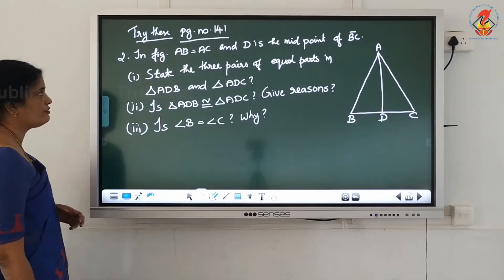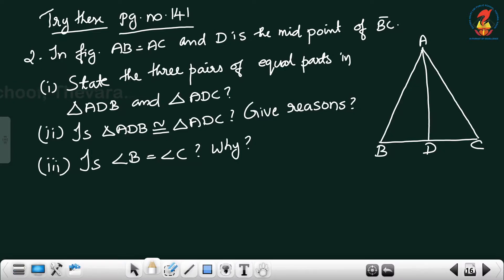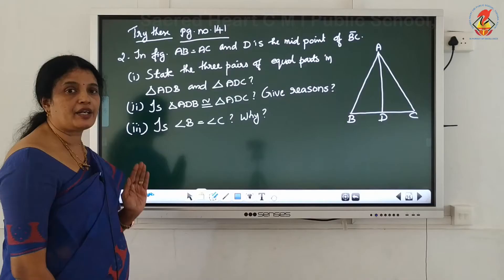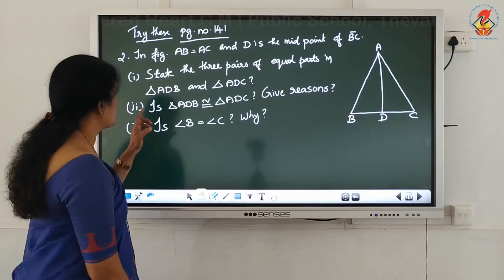Next, let us try page number 141. In figure, AB equal to AC and D is the midpoint of BC. State the 3 pairs of equal parts in triangle ADB and triangle ADC. Second question: is triangle ADB congruent to triangle ADC? Give reasons. Is angle B equal to angle C? Why? The figure already has some conditions given in the question - AB equal to AC, meaning these 2 sides are equal.